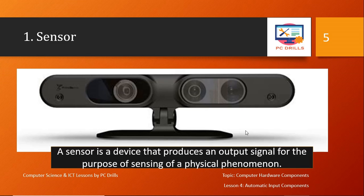A sensor is a device that produces an output signal for the purpose of sensing a physical phenomenon. It may look like a simple camera, but when something passes in front of it, it activates — for example, a shadow blocking the sensor's vision triggers the camera to snap a photo. A physical phenomenon occurs and triggers the device to perform an action.